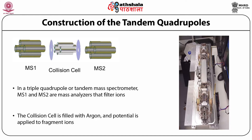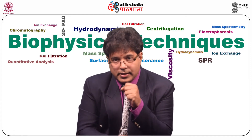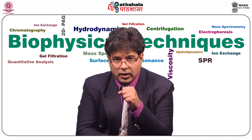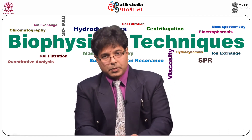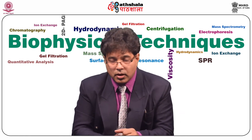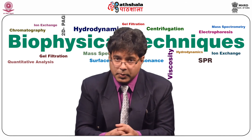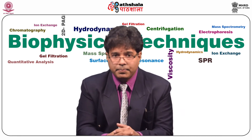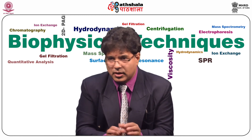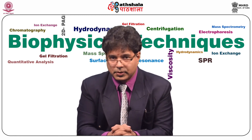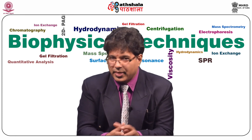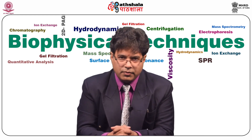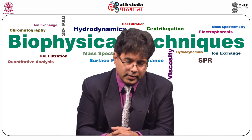In summary, this module covered the evolution of mass spectrometers from JJ Thompson's experiments to today's commercially used instruments, the fundamentals of mass spectrometry including the basis of separation and classification, the parts and types of mass spectrometers, their resolution, dynamic range, and mass accuracy. Further lectures will explain the remaining topics. Thank you very much.